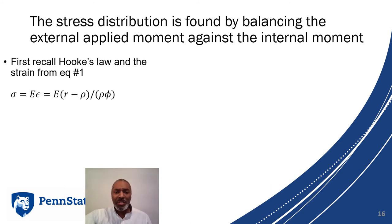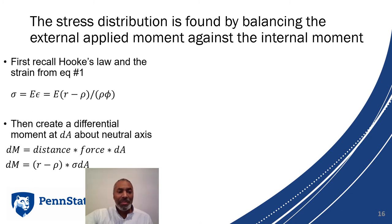Our goal here is to find the stress distribution by balancing the externally applied moment against the internal moment. We'll recall Hooke's Law and strain from equation one. Let's use that to create a differential moment at dA about the neutral axis. If we compute a distance times a force times dA, and that distance is from the neutral axis, we'd have r minus rho times sigma dA.